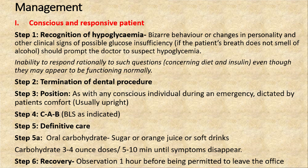Step three is positioning: since the patient is conscious, ask and place them in the most comfortable position, usually upright. Step four is circulation, airway, and breathing — basic life support as indicated in hyperglycemia. Step five is definitive care: since the patient is conscious, administer sugar, orange juice, or soft drinks, along with carbohydrates at 3 to 4 ounce doses every 5 to 10 minutes — approximately 80 to 110 grams — until the patient starts recovering.